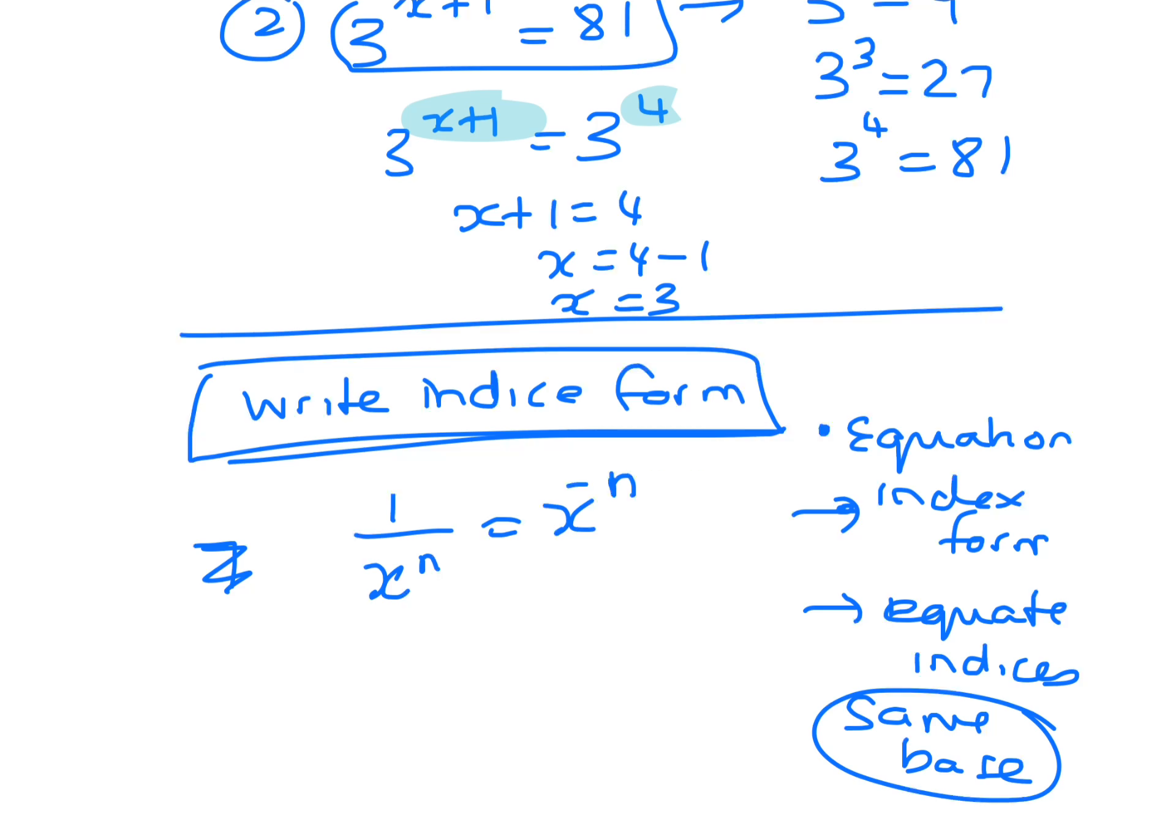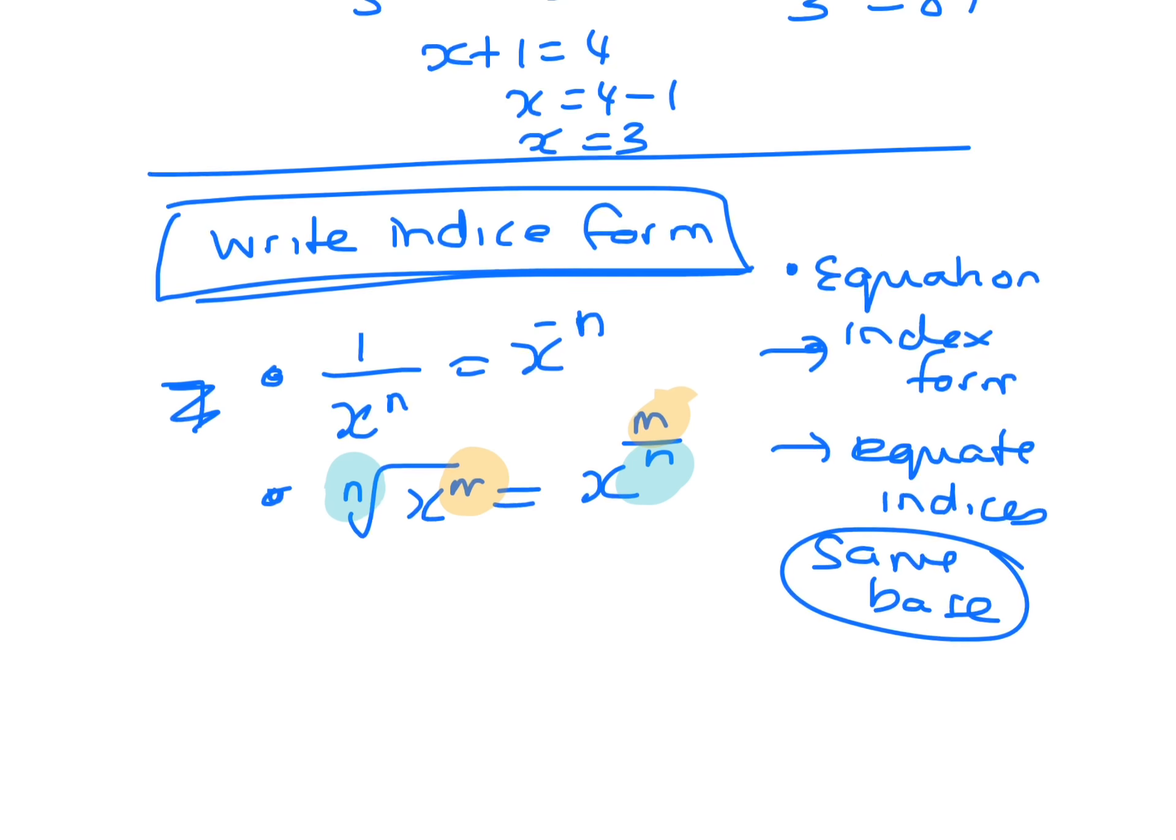If we've got the nth root of x to the m, we can write it as x to the m over n. And what's on the root thing, or what's on the floor is at the door, and what's on top stays on top. The other thing we can do is, so that's the negative one.